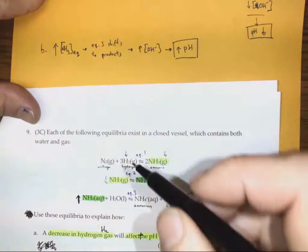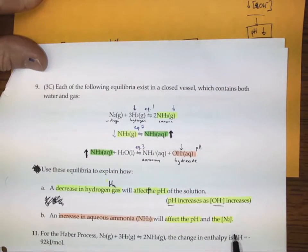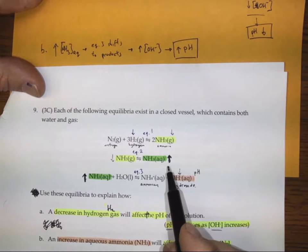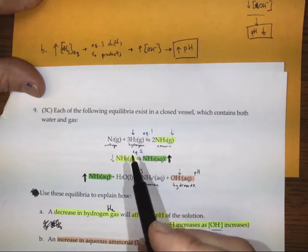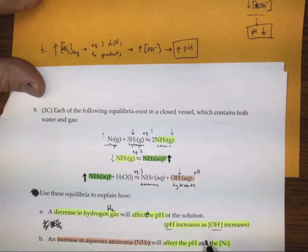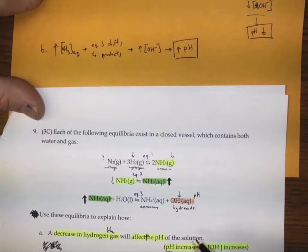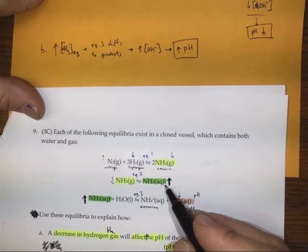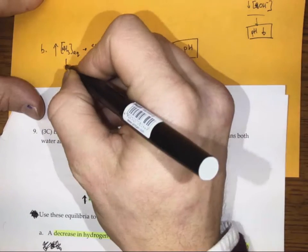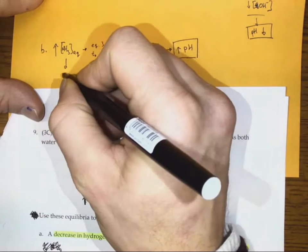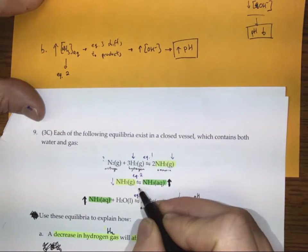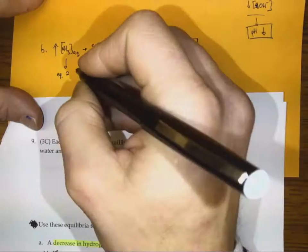However, we were also asked how this increase in ammonia affects the nitrogen gas. So now we're going to trace it back to find out about the nitrogen gas. As we increase our aqueous ammonia, it's going to also shift equilibrium 2 to the reactants.